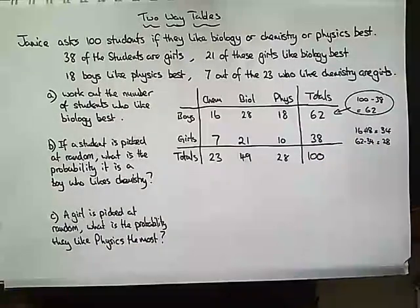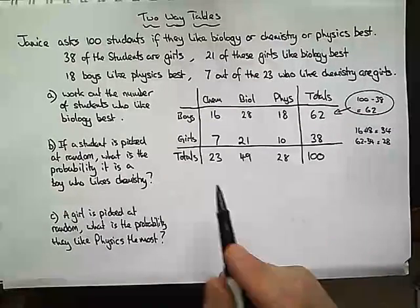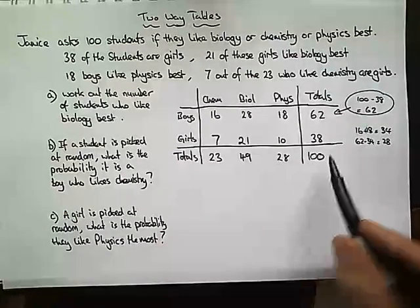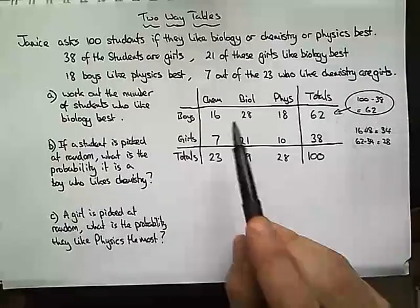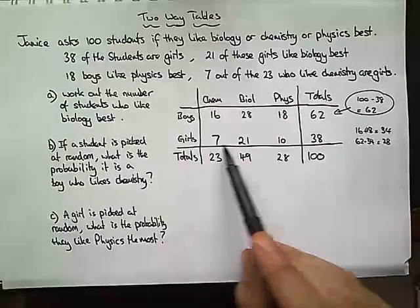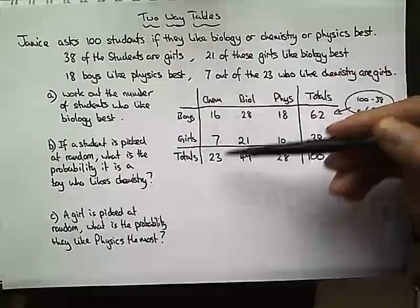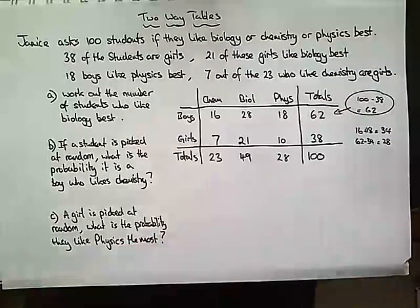We can check all of these add up. I'm pretty confident that the rows will all add up to 100, the girls column will add up to 38, the boys column to 62, and the columns will also add up to the totals at the bottom.